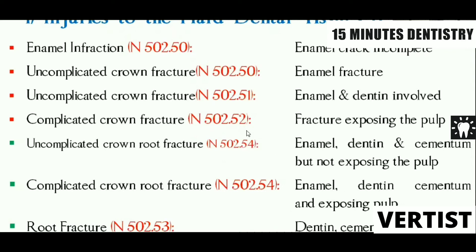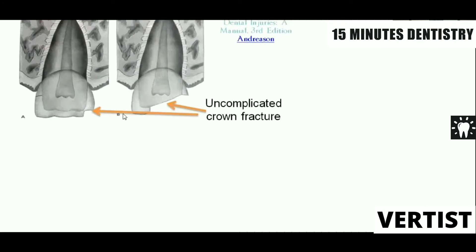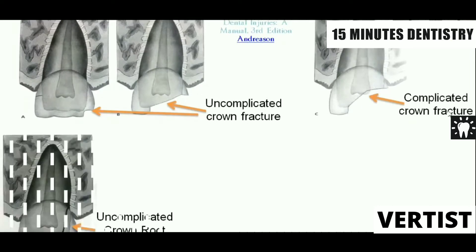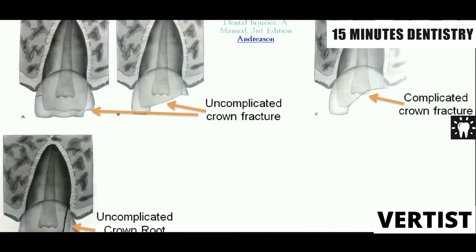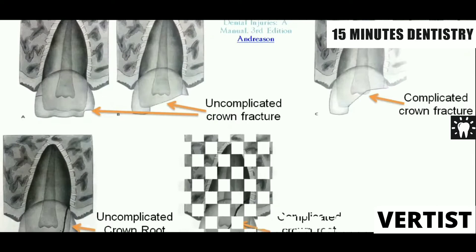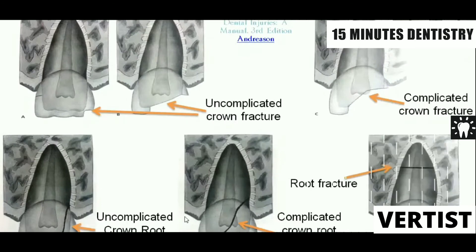Looking at photographs: uncomplicated crown fracture — the first image shows only enamel involved, the second shows dentine involvement. When the pulp is clinically exposed, it becomes a complicated crown fracture. Then uncomplicated crown-root fracture shows the fracture line extending from enamel through dentine, ending on the cementum, with no pulp involvement. It becomes complicated when the fracture line passes through the pulp. Lastly, root fractures are shown.